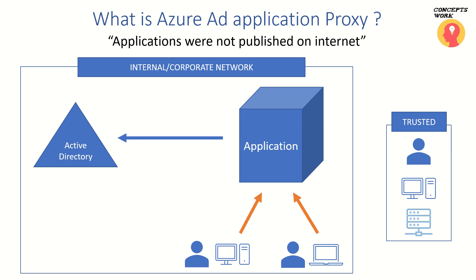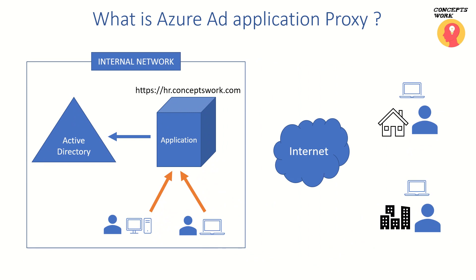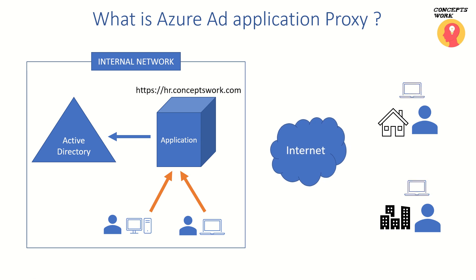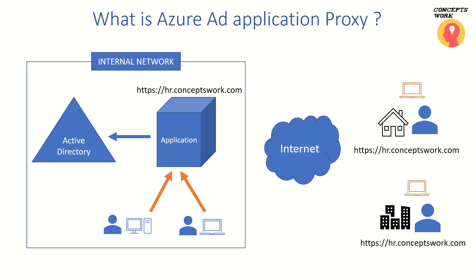But with the proliferation of devices and cloud adoption, users want to access all applications irrespective of their location. That means a user can be at home or at a remote location, using the same device the enterprise has given them, and they want to access the same application. There should be no barrier like having to exist in the internal network to access an application. The other scenario is they could be using their own devices, but they still need access to this application.